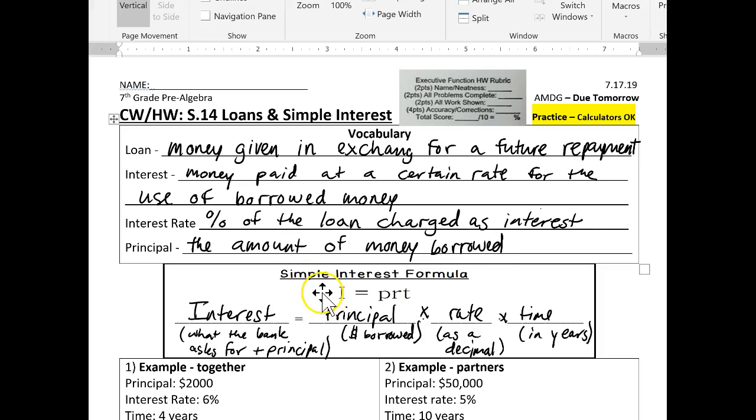So basically we have this simple interest formula to calculate how much money in terms of interest I'm going to have to pay back plus the principal. So interest is basically what the bank asked for plus principal. So not only are you going to give them back the money that you borrowed, you're also going to give them back interest, right? How do we calculate that? You take the principal, the money you borrowed, times the rate. The bank will give you a percent rate. You write this as a decimal, times the time in years that you borrow the money.